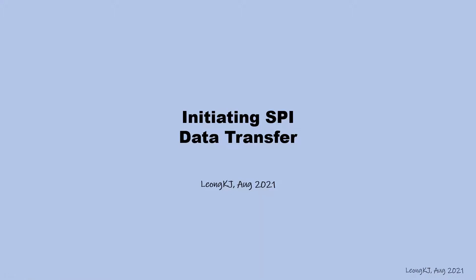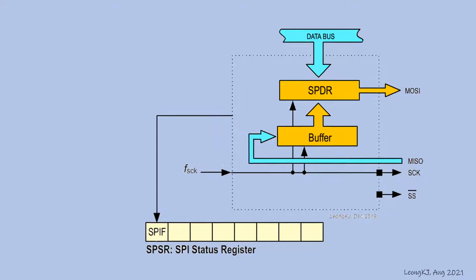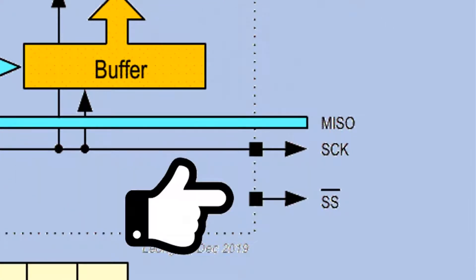Initiating SPI Data Transfer. This block diagram represents the SPI circuit in the microcontroller. To start SPI data transfer, the microcontroller sets the slave select signal low.